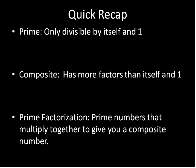So just a quick recap. A prime number is only divisible by itself and one. It has to be greater than one. So one is not considered a prime number, typically. A composite number has more factors than just one and itself. And prime factorization is the prime numbers that multiply together to give you a composite number. All right? There's our quick recap. Have a great day.